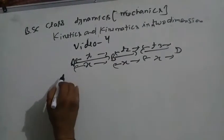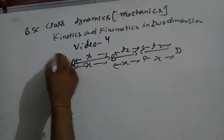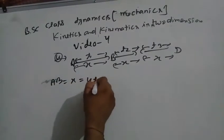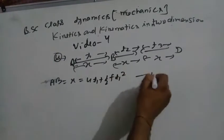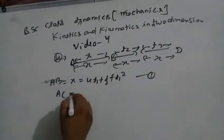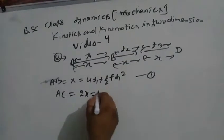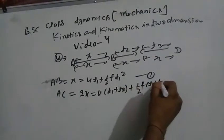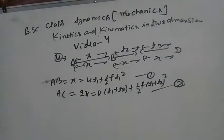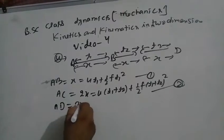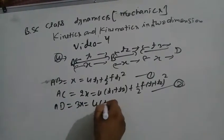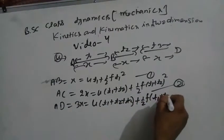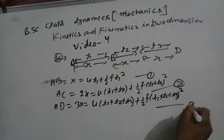Distance x: x = u·t1 + ½f·t1², this is equation number 1. Distance 2x: x = u(t1 + t2) + ½f(t1 + t2)², equation number 2. Distance 3x: x = u(t1 + t2 + t3) + ½f(t1 + t2 + t3)², equation number 3.